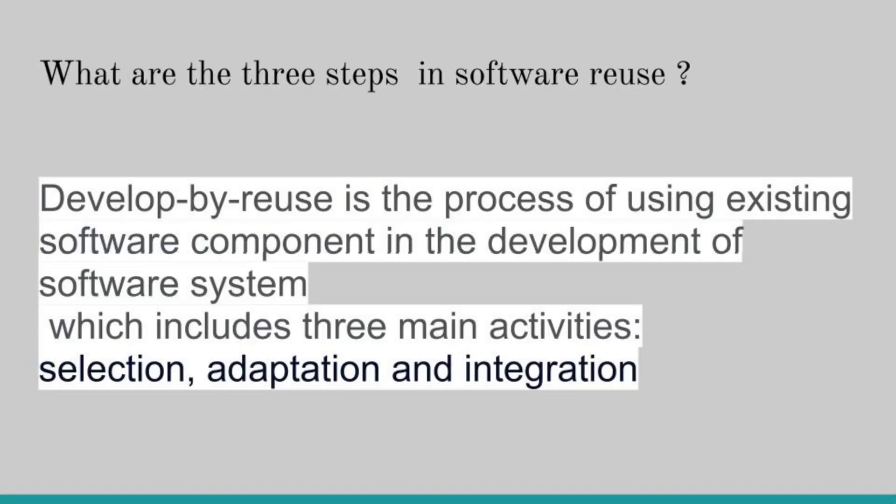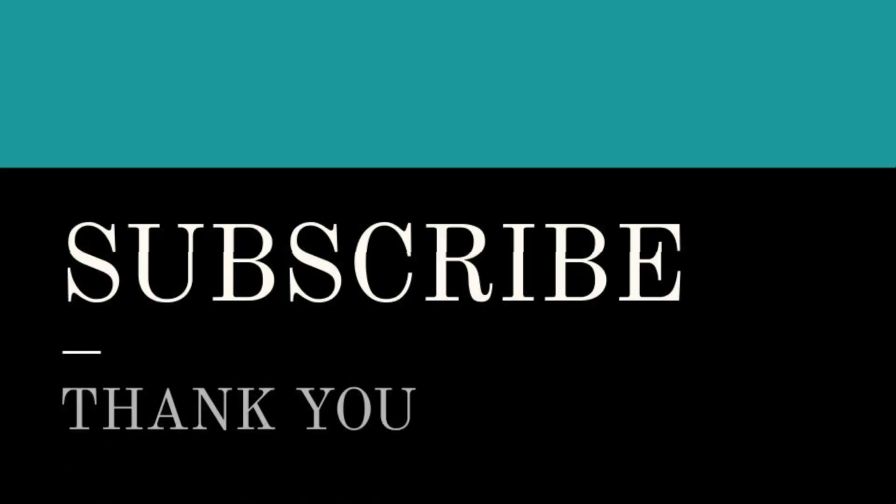What are the three steps in software reuse? The process of develop-by-reuse involves using existing software components in the development of a software system. This includes three main activities: selection, adaptation, and integration.